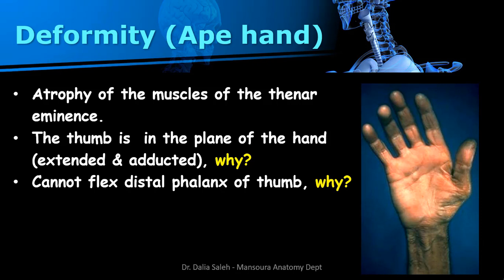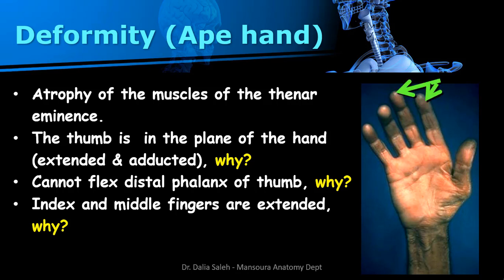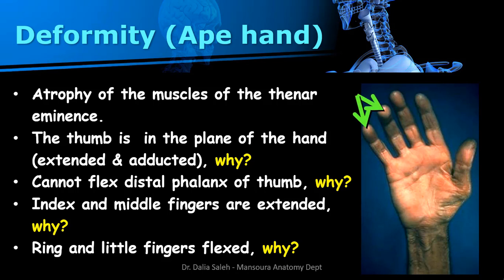This is due to paralysis of the flexor pollicis longus muscle. Also, the index and middle fingers are extended and the patient cannot flex them, because of paralysis of the flexor digitorum superficialis and the lateral half of the flexor digitorum profundus. The little and ring fingers can still be flexed because the medial half of the flexor digitorum profundus is not supplied by the median nerve.